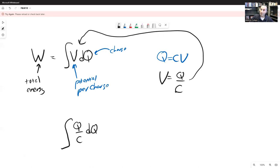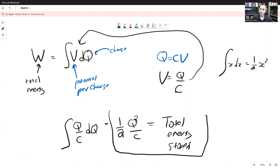This is Q over C times DQ. This is pretty easy to evaluate analytically. This is Q times DQ. Integral of X DX equals one-half X squared. So this is going to work out to be one-half times Q squared divided by C.